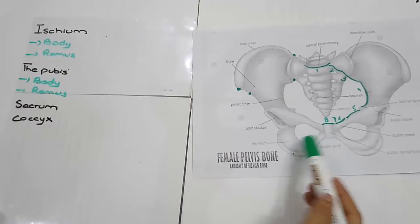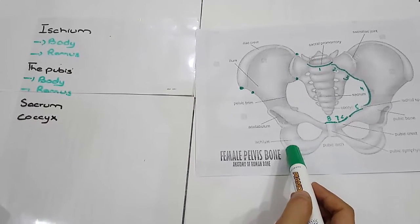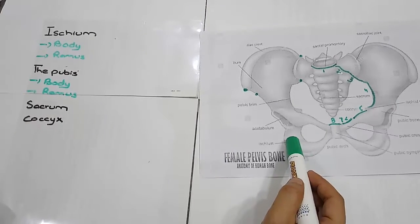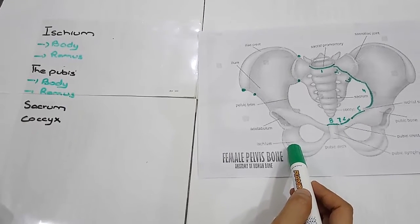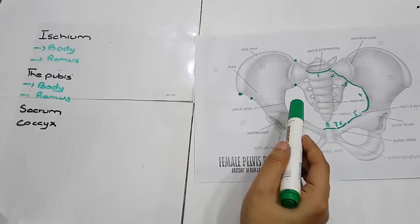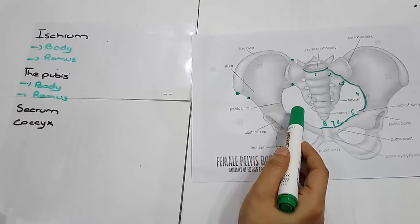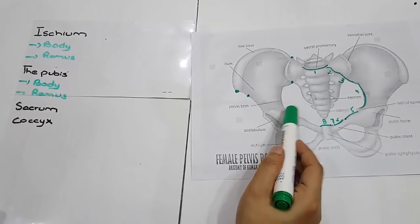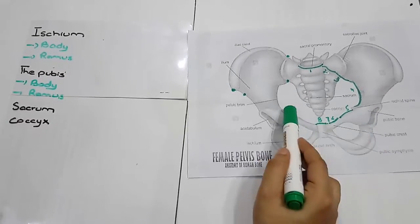It has a large prominence known as the ischium tuberosity. Behind and a little above the tuberosity is an inward projection which is known as the ischium spine. This is an important landmark.